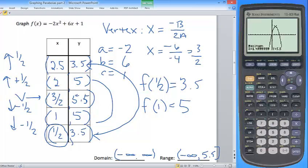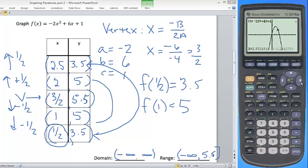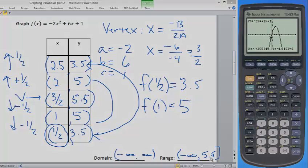The same is true if I take a look at my graph on my graphing calculator. The highest value that I get to is 5.5, but it just goes down from there. If I trace, I can see that I am going all the way down. I just get to 5.5 and then I keep going back down again. So again, my range goes from negative infinity to 5.5.